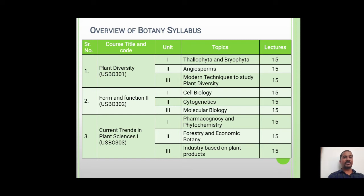Each unit in every paper carries 15 lectures. The second paper, Form and Function 2, also has three units: the first unit is Cell Biology, the second unit is from Cytogenetics, and the third unit is from Molecular Biology.